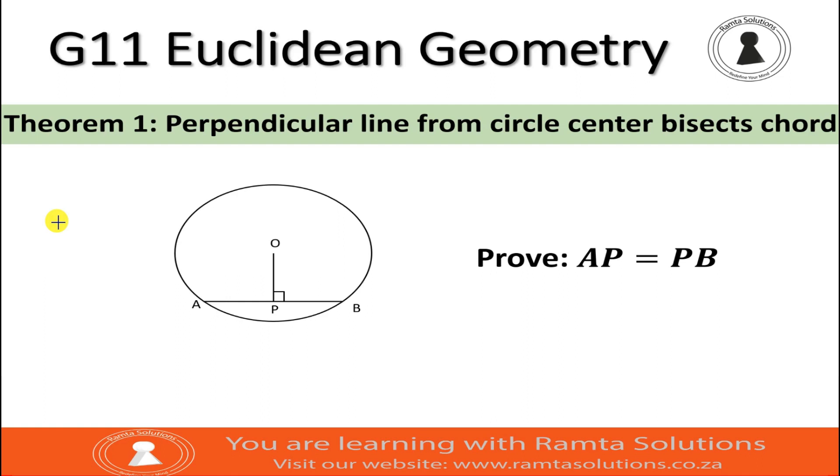So, using this theorem, we have to prove that AP is equal to PB. So how do we go about it? And by the way, the statement of this theorem says, please write it with me. It says, if a line is drawn from the center of a circle.